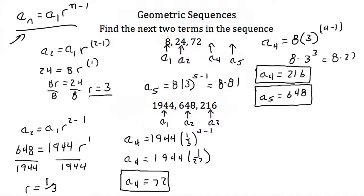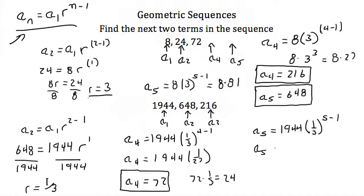Now you could just take the fourth term and multiply 72 by one third to get the fifth term, which would be 24. But let's use our formula to check. For a_5: that's 1,944 times one third to the 5 minus 1 power, which is one third to the fourth power, or 1/81. 1,944 times 1/81 is indeed 24. So our fifth term is 24.